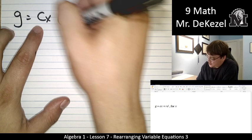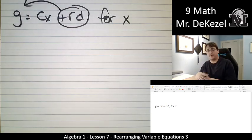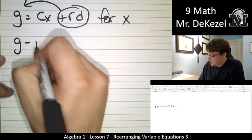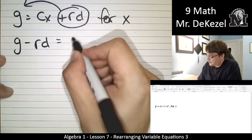So we can go ahead and we can actually just subtract both of these at the same time. They have to stay together. Those are multiplied together. But we can subtract both variables from the other side. So this becomes g minus rd. Right. Positive on one side. Negative on the other. Is equal to cx.